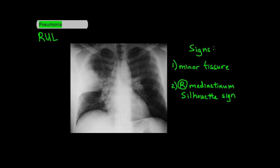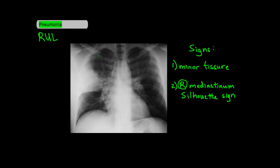The first one we'll talk about is a right upper lobe pneumonia, which could look like this. Remember that the right upper lobe covers this area, so a right upper lobe pneumonia could be anywhere in this area. Two things you want to look for to diagnose a right upper lobe pneumonia include first seeing the minor fissure, and second the silhouette sign of the mediastinum.